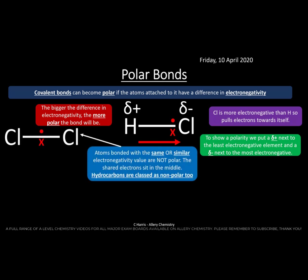Because the bond is attached to an electronegative element, it creates a permanent charge on the molecule. Compare this with Cl₂, where both atoms are equally electronegative — there is no pulling of electrons in that bond, so the shared electrons sit right in the middle, whereas in HCl they are pulled to one side.